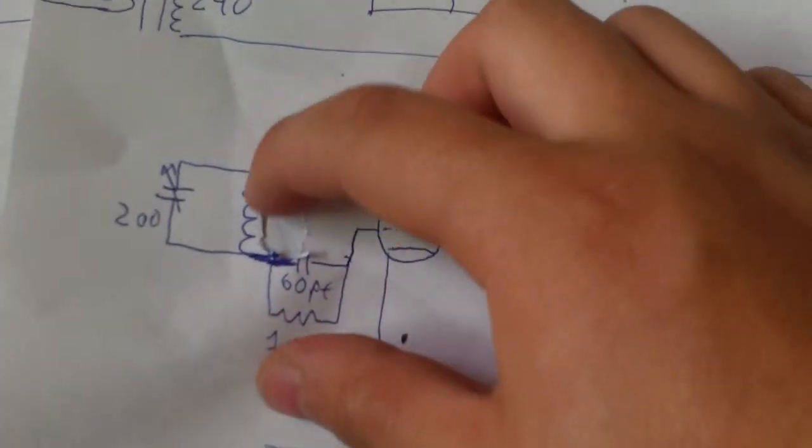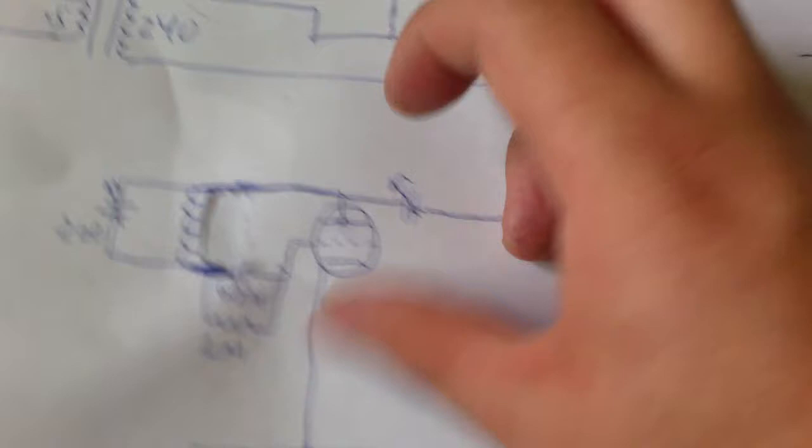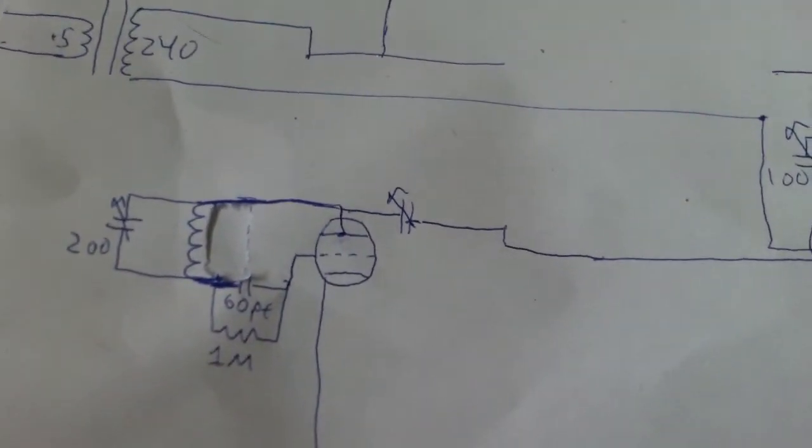Oh, I forgot to draw it actually. There's a tap right here that goes to the B+. No, let me just draw that. I'll be right back.